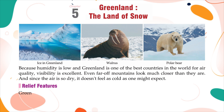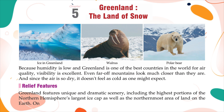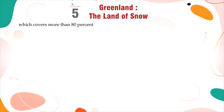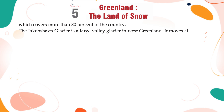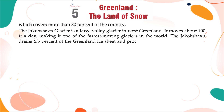Relief Features: Greenland features unique and dramatic scenery, including the highest portions of the northern hemisphere's largest ice cap as well as the northernmost area of land on the earth. One of Greenland's most prominent geographic features is its massive ice sheet, which covers more than 80% of the country. The Jakobshavn Glacier is a large valley glacier in West Greenland. It moves about 100 feet a day, making it one of the fastest-moving glaciers in the world.